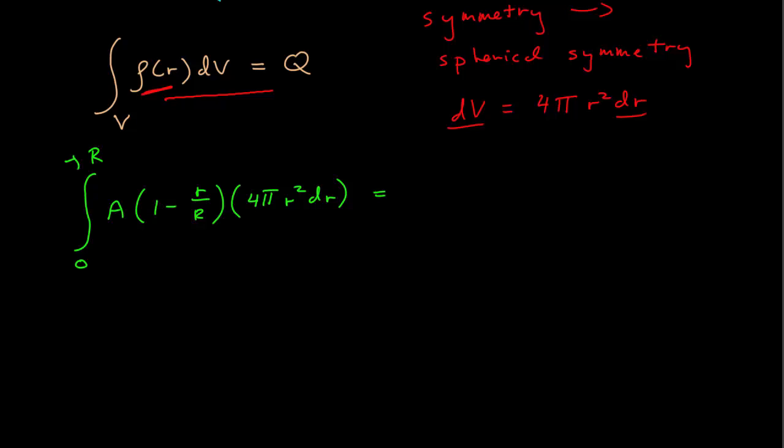So pull out the constants, and I have 4πA integral from zero to R of (r² - r³/R)dr. That's simple enough, it's just two polynomials. So I get the indefinite integral of this: 4πA, r³/3 minus r⁴/(4R), evaluated at zero and capital R.